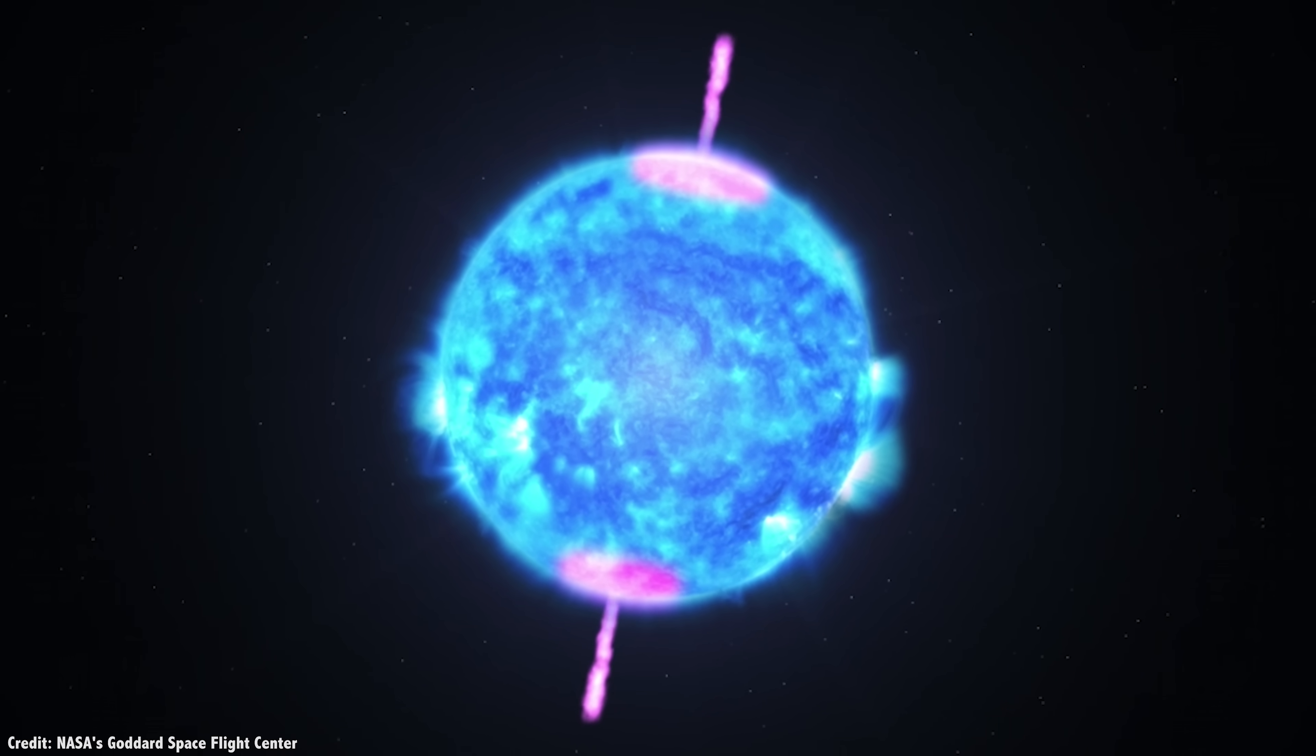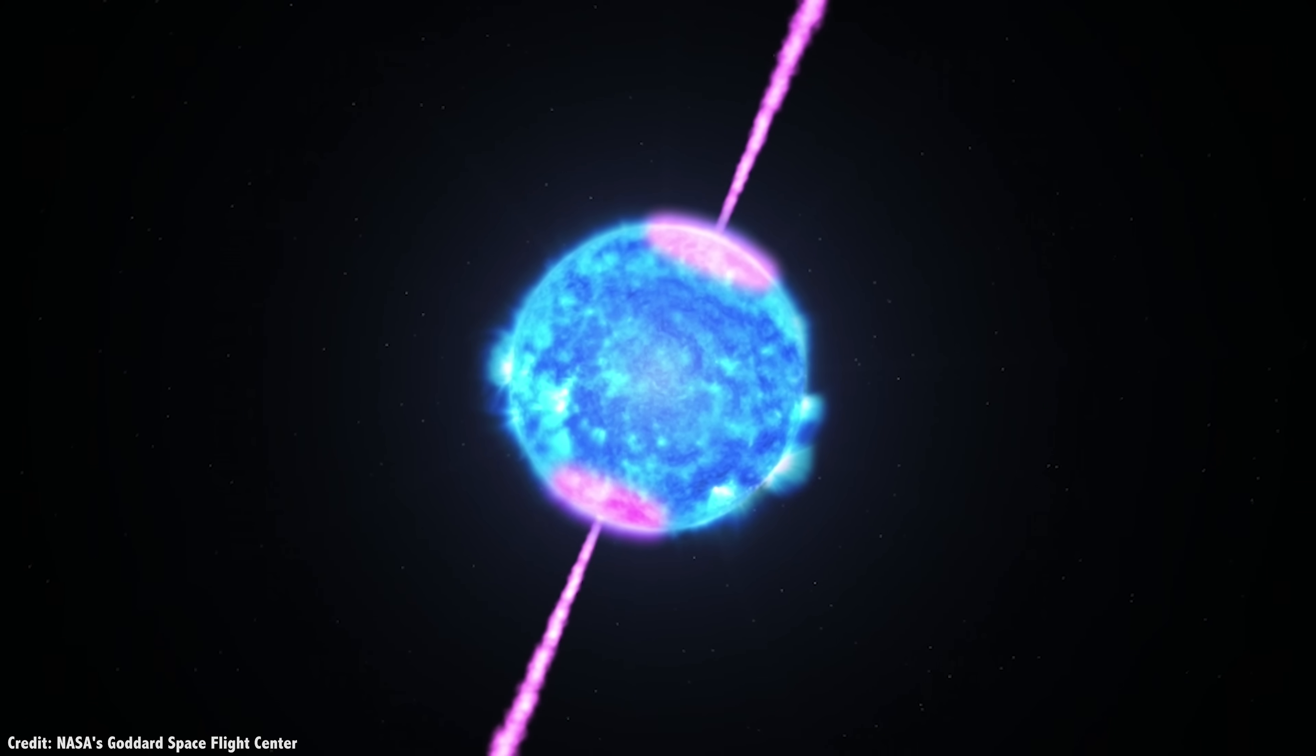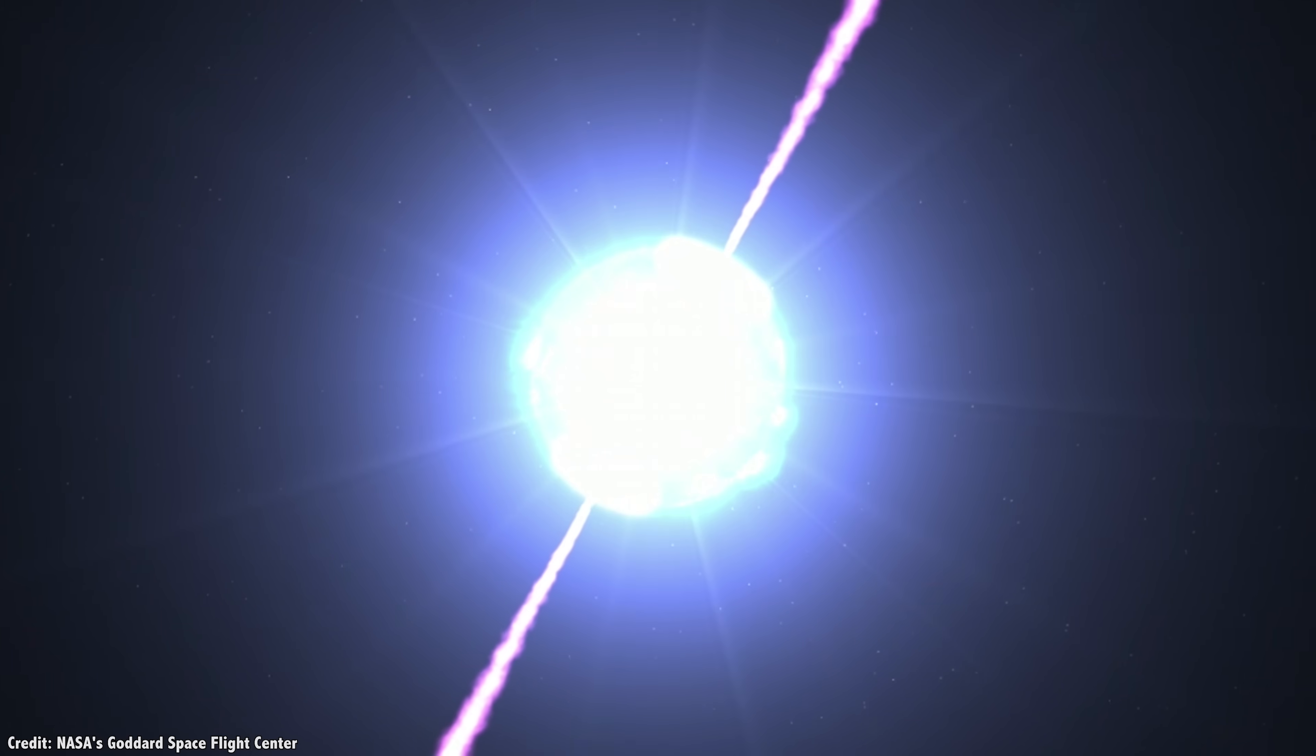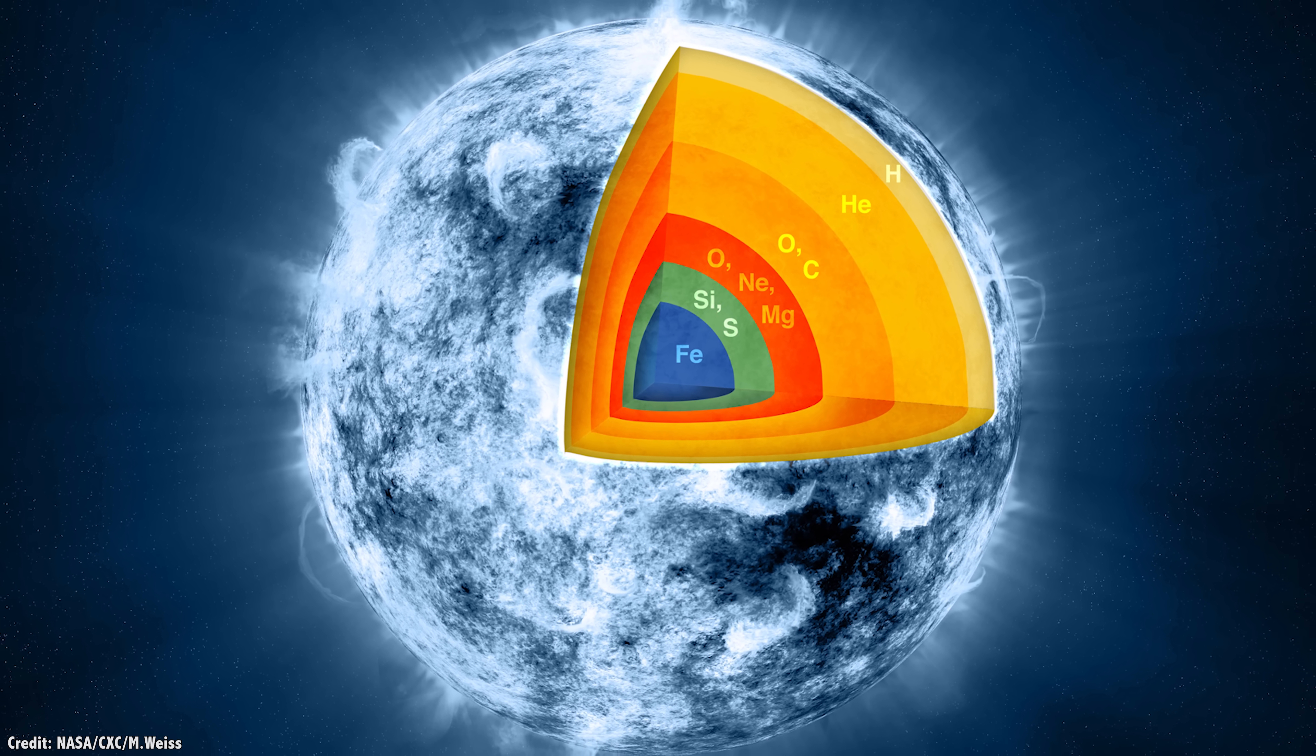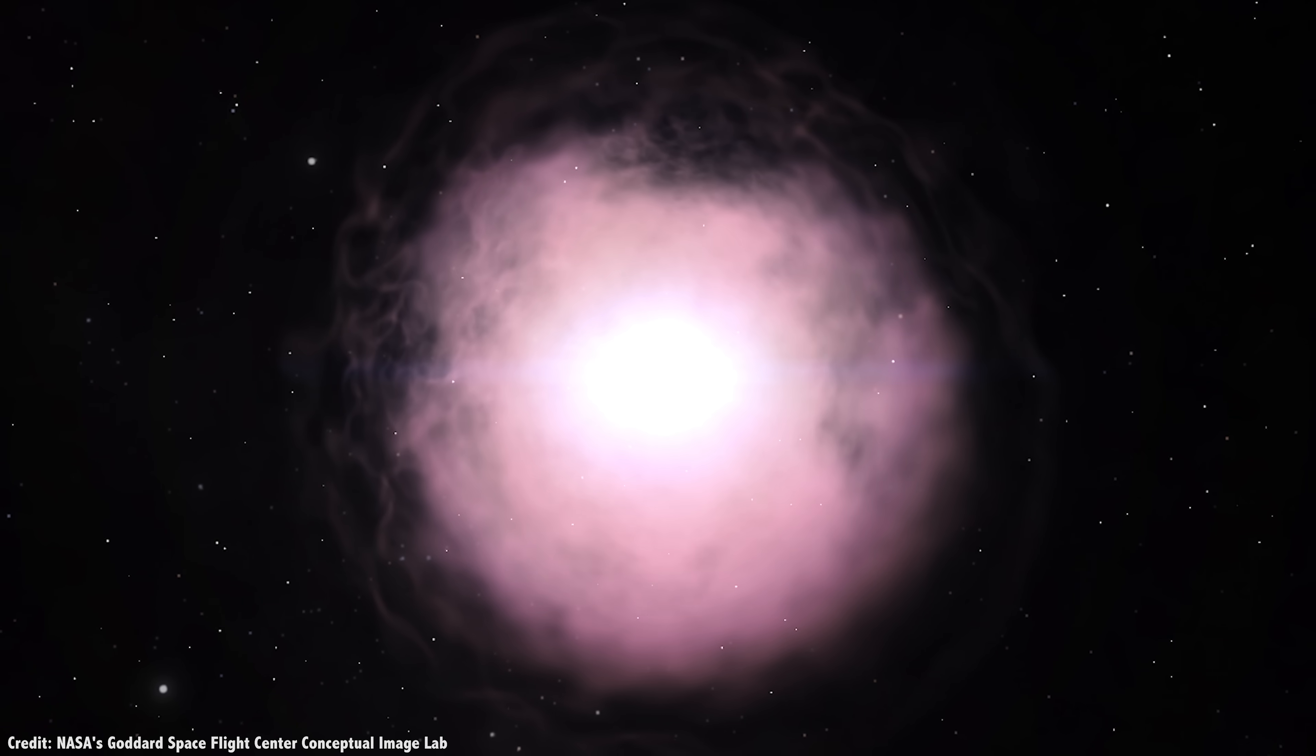There are two main types of supernovae seen in the universe. They are the core collapse variety, where a star many times more massive than our sun runs out of fuel in its core. It burns through its hydrogen, switching to helium, carbon, etc., all the way up the periodic table of elements until it reaches iron. Since the fusion of iron doesn't release any energy, the outward light pressure keeping the star inflated goes away, and it collapses in on itself. The material falls inward at close to the speed of light, creating a neutron star or black hole.